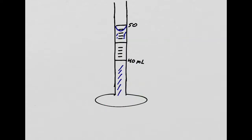I think you're ready for a practice problem. Here's a 100 mL graduated cylinder — I'm not very good at drawing, just use a little imagination. I added water to this, and what I want you to do — even though I can't see you, do it — write down what this volume is. If you were in lab, write down the volume.